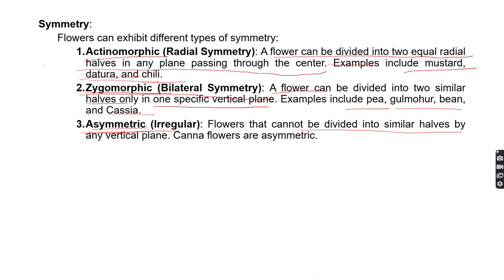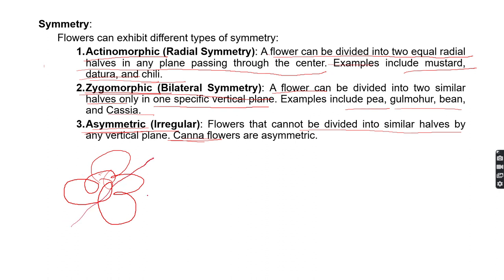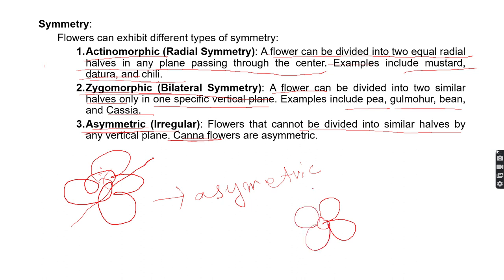Some flowers cannot be divided into two similar halves; we call these asymmetrical flowers. Canna is an example. Some flowers with four petals — if we divide them through any plane — will give two equal halves; such flowers are called actinomorphic or symmetric flowers.